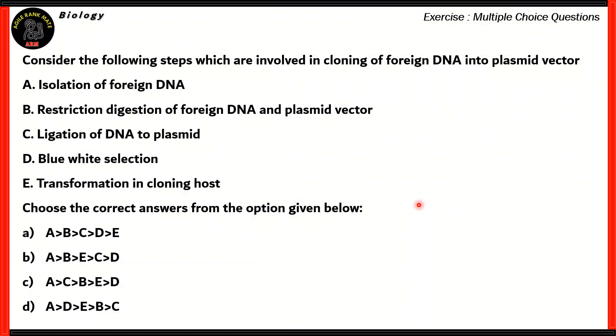Here's a question from biology. Consider the following steps which are involved in cloning of foreign DNA into a plasmid vector: A. Isolation of foreign DNA, B. Restriction digestion of foreign DNA and plasmid vector, C. Ligation of DNA to plasmid, D. Blue-white selection, E. Transformation in cloning host. So these are the five steps. We need to choose the correct answer from the options given below. So we have five ways to arrange these five statements such that they are in the right order. So if you look at the options, you see that statement number A, isolation of foreign DNA, is the first step in all of the statements. So it has to come first.